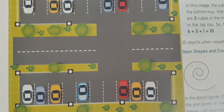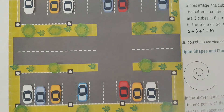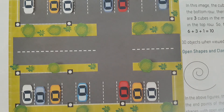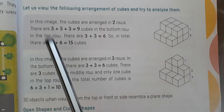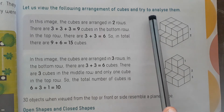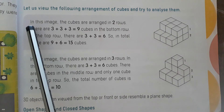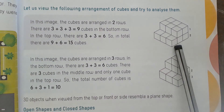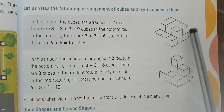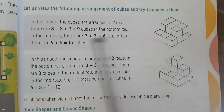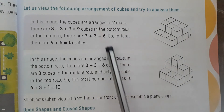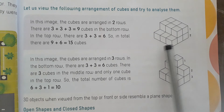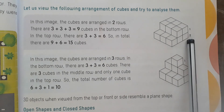So here the children are viewing from the top, so this is the top view of the parking lot. Let us view the following arrangement of cubes and try to analyze them. In this image, the cubes are arranged in two rows. There are 9 cubes in the bottom row — arranged as 3 plus 3 plus 3.